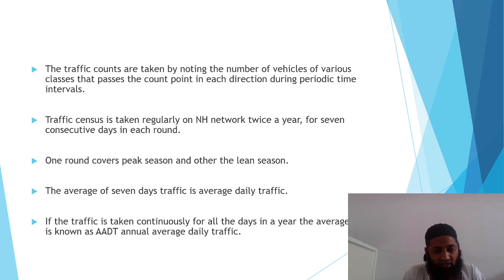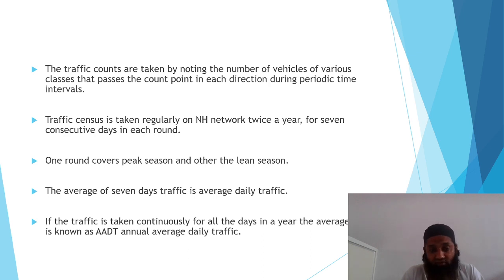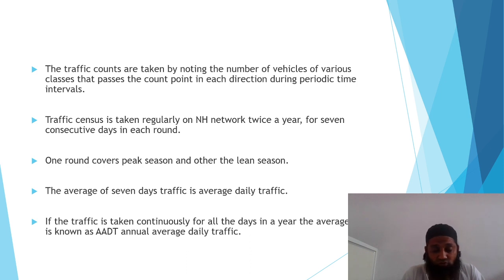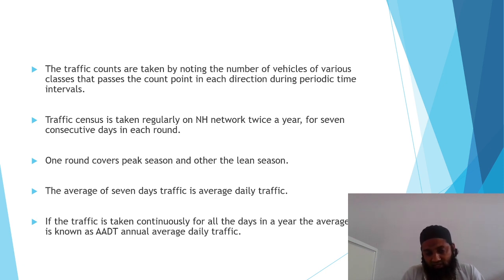The whole day is divided into hours and at each junction, the types of vehicles crossing are specifically noted down. Within a day we get the exact count, and depending on that count we can properly design the pavement. Traffic census is taken regularly on the NH (National Highway) network twice a year for seven consecutive days in each round. One round covers the peak season and the other covers the lean season. Depending on this, we can properly design a highway.